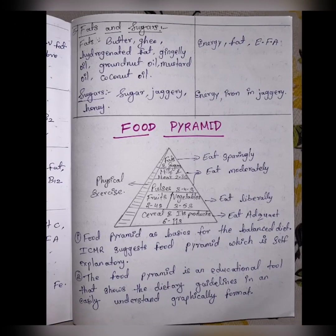Group 5 — Fats and sugars. Fats include butter, ghee, hydrogenated fat, gingelly oil, groundnut oil, mustard oil, and coconut oil. Main nutrients: energy, fat, and essential fatty acids. Sugars include sugar, jaggery, and honey. Main nutrients: energy and iron (in jaggery).